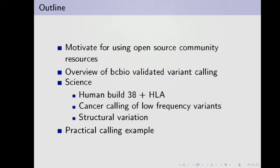Here's the outline of what we'll cover. This is totally free form — I'll give an introduction for a while, then we can look at an analysis I ran in depth. I'll start by talking about motivation for using open source community resources, which is one of the things that distinguishes us from other tools. Then an overview of what you can do in BC Bio, specifically around variant calling. BC Bio also has RNA-seq and small RNA analysis, but I tend to do variant calling analyses, so I'm better at talking about that.